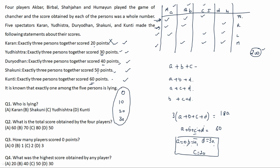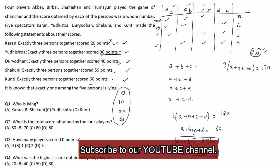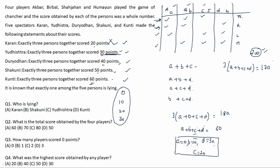Now checking the other cases: if we remove the 30-point statement instead, 3(a+b+c+d) equals 200 minus 70 equals 170, and 170 divided by 3 is not a whole number, so this case is eliminated. If we remove the 40-point statement, 200 minus 40 equals 160, and 160 divided by 3 is also not a whole number, so that case is also eliminated.